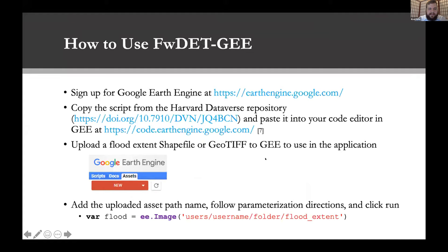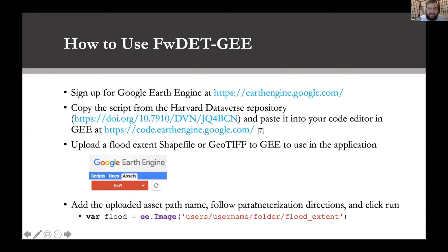If you're interested in using this tool, it's really easy. To sign up for Google Earth Engine, all you need is a Gmail account — it's free and open access, and you're usually permitted to use it instantly. Copy the script from the Harvard Dataverse repository and paste it into your code editor and it will run immediately. The only two things needed are a flood extent layer and the DEM, which is already in the code and pulled from the Earth Engine data repository. Once the asset is uploaded, just change the path name, follow the parameterization directions, and click Run.